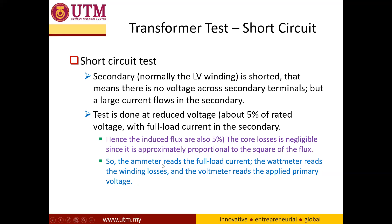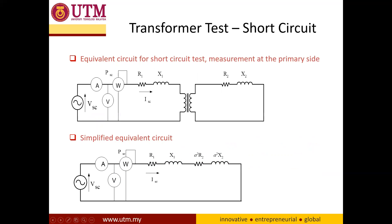The ammeter reading, voltage reading, and power reading will represent the internal resistance of the winding and also the leakage inductance. To simplify the calculation, we transfer all the secondary parameters into the primary. R1 and the secondary parameters combine to form R equivalent 1, while X1 and a² times X2 combine to form X equivalent 1.